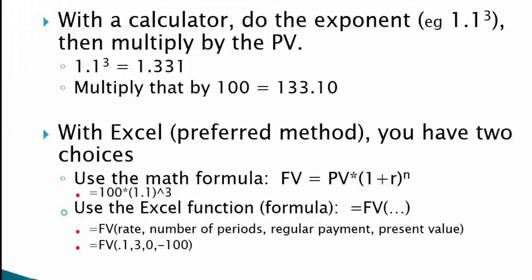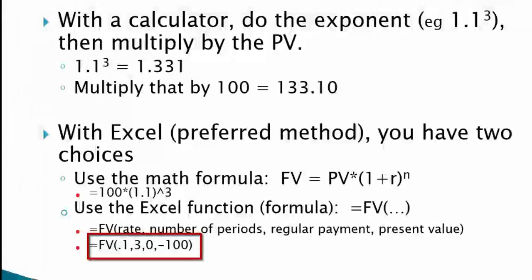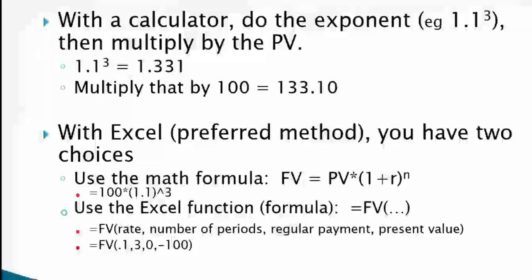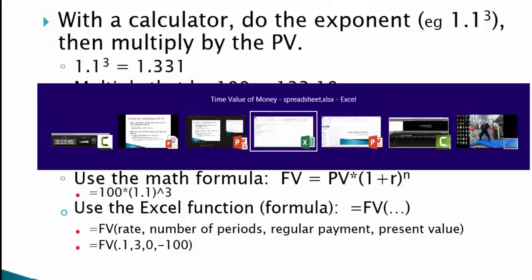Going back to our example: finding the future value of $100 after three years at ten percent. Using the FV function, we type =FV(0.1, 3, 0, -100). The interest rate is 0.1, we have three years, no regular interim payments, and the present value is entered as negative $100. We'll discuss the negative sign convention more, but for now accept that negative is the appropriate input for the present value.